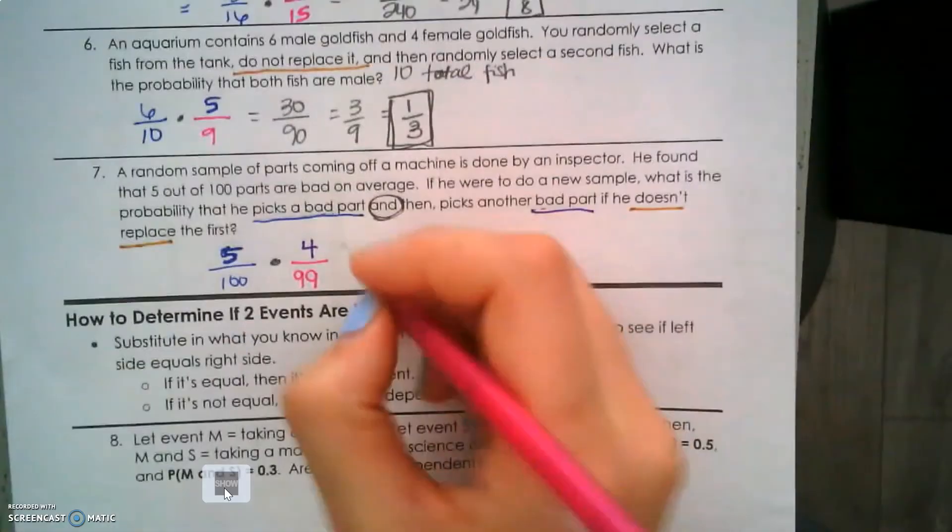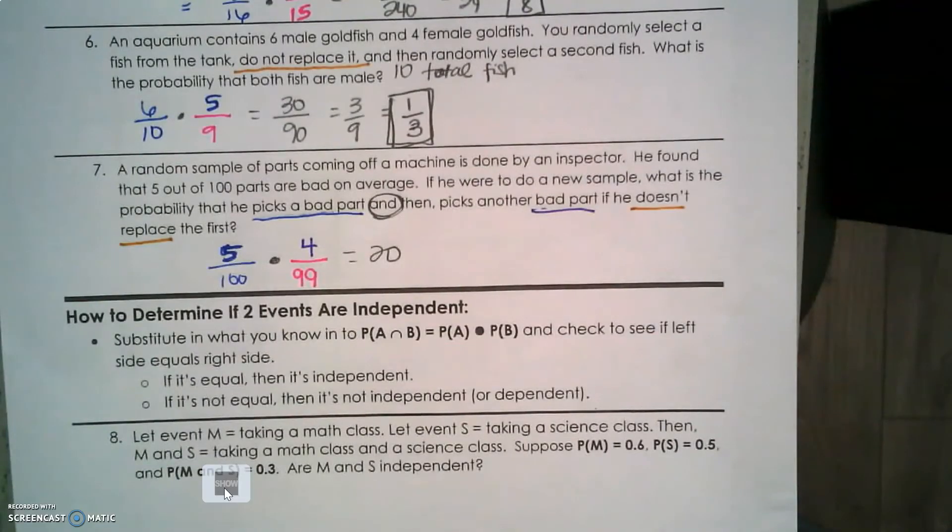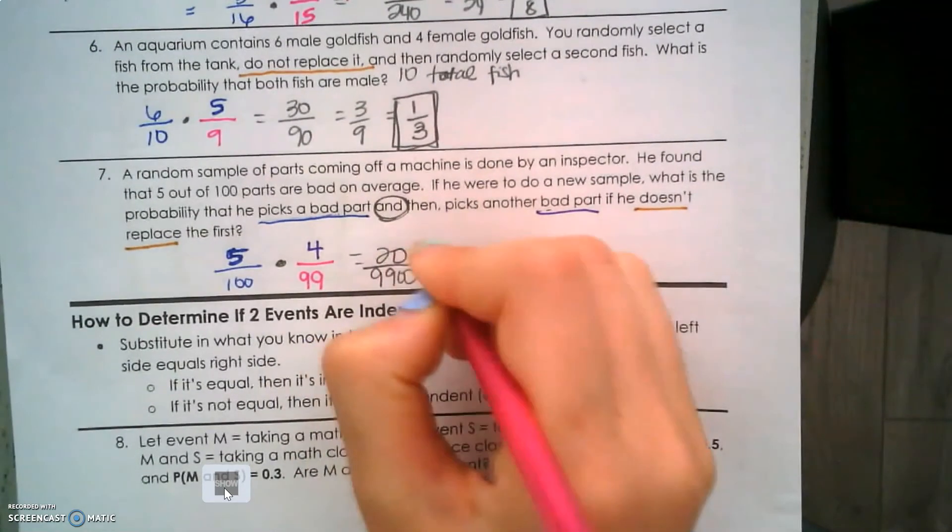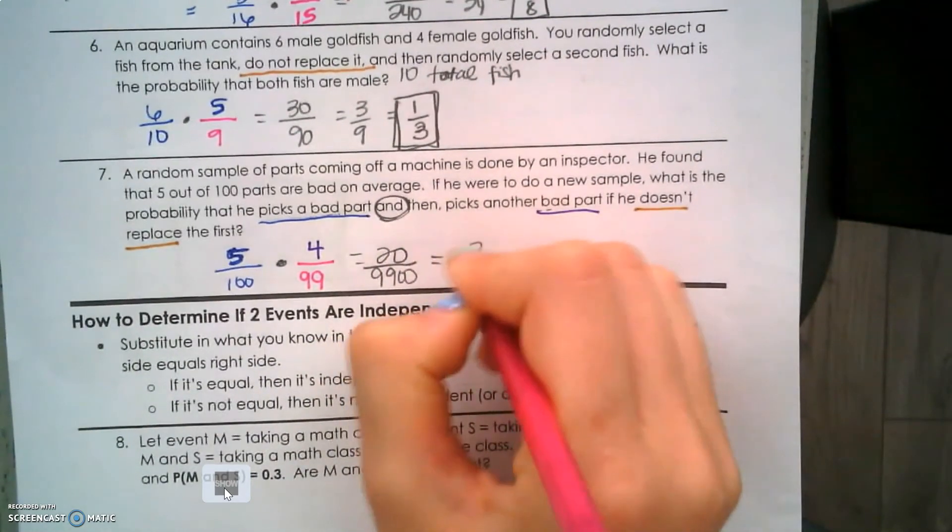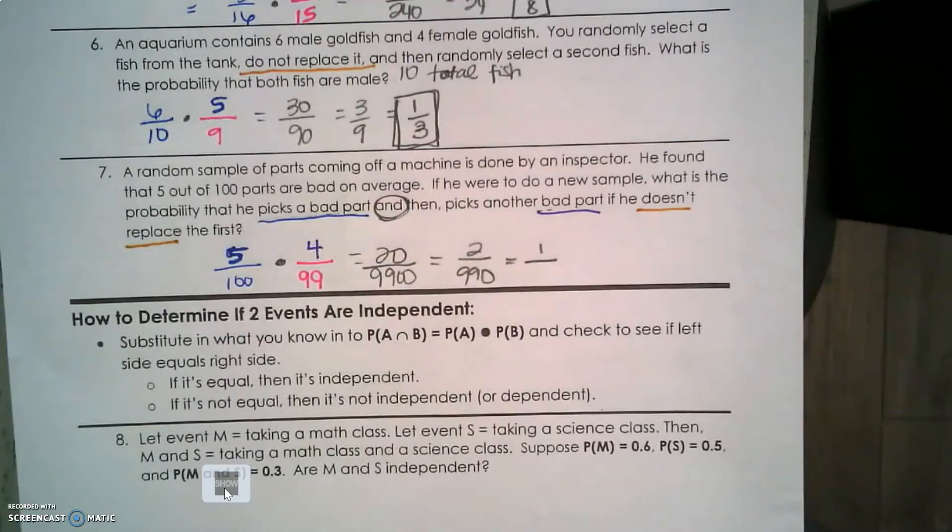So this is 5/100 × 4/99 = 20/9900. That's 2/990, which simplifies to 1/495.